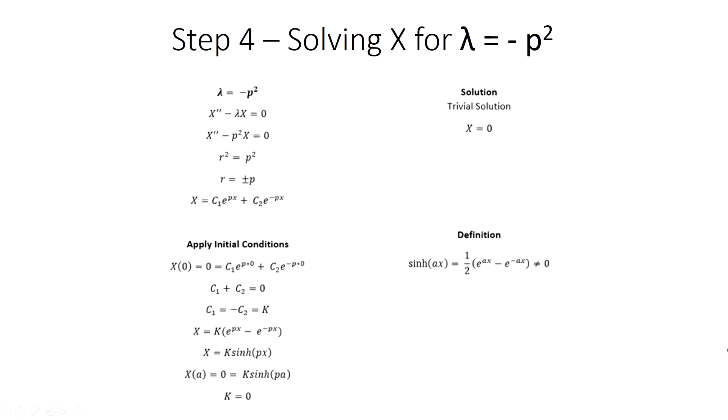Moving on to the case where lambda is negative, we solve the ODE by creating the characteristic equation. Solving this characteristic equation gives us r equals plus or minus p. Once again, we plug in our initial conditions and the boundary conditions to identify what our constants are. Based on the definition of the hyperbolic sine function, this solution is trivial as well, as it will never equal zero.